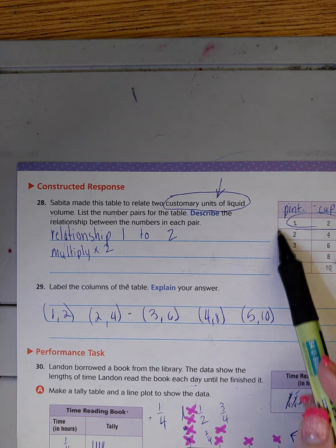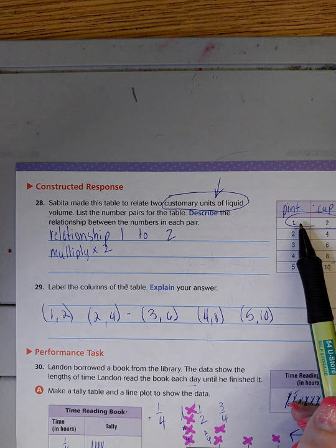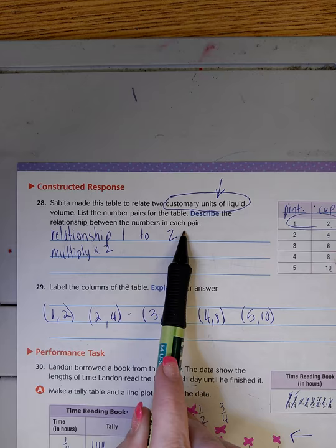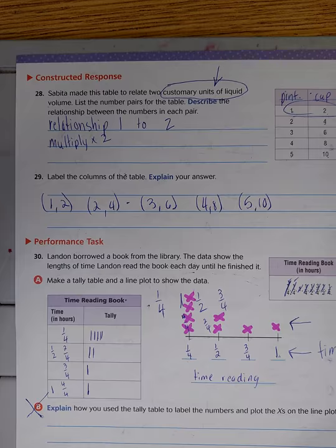Let's look at 28. This is where we are looking at our conversion sheet and figuring out the relationship. We look at the first two lines: it is one to two. We would use our conversion sheet. It says customary units of liquid. We'd look under liquids and find the one that says one to two, which is pints and cups. Relationship is one to two, which means we multiply by two. Here are our ordered pairs: one two, two four, three six, four eight, five ten.